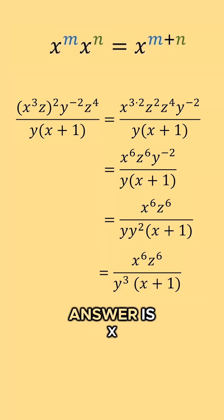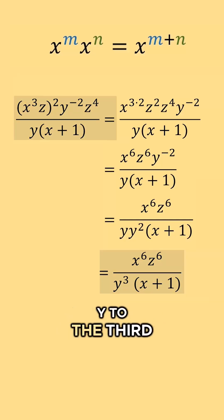And so our final answer is x to the sixth power times z to the sixth power, all divided by y to the third power times the quantity x plus one.